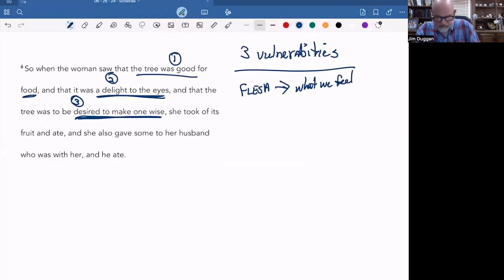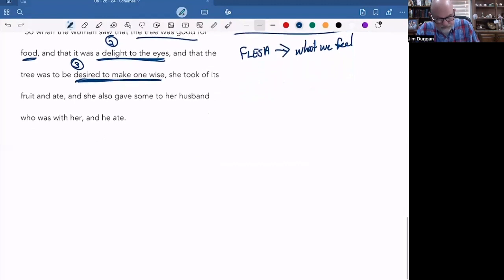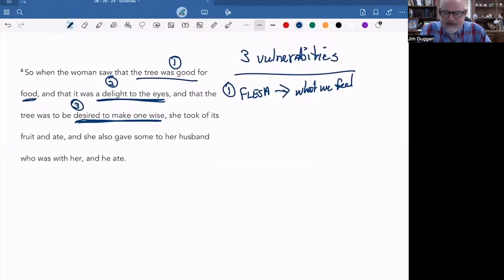What we feel. She saw the tree was good for food. Was she about to starve and had all the other sources for food dried up in the garden? No. She was greedy. She was questioning God's goodness and sufficiency. What God had given was not enough. There was something out there that may be better than what God had provided, and she wanted it. That's why sexual sin is so dangerous. That's why sins like gluttony are so dangerous. That's why addictions are dangerous. They appeal to how we feel. They alter how we feel. So we have to watch out about the temptations of the flesh.